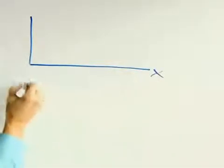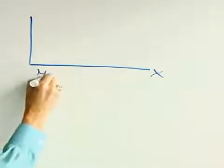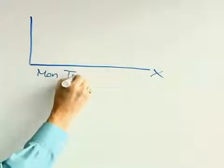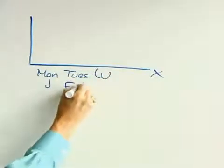On the x-axis we have data in some sort of chronological order. For example, Monday, Tuesday, Wednesday. It could be January, February, March.